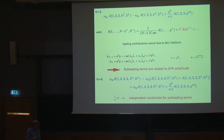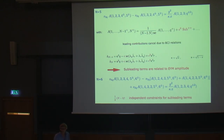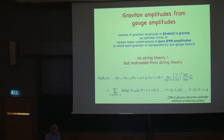We obtain as many independent constraints for the sub-leading terms. The challenge is that we need additional constraints to fully solve the system of equations, and this remains an open question. Jan will talk about this tomorrow, where there has been some progress compared to his last time in Chicago.